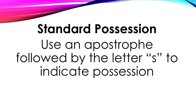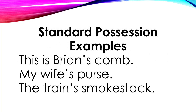Here's standard possession. What you do to indicate possession is to use an apostrophe followed by the letter S. So let's take a look at some examples. This is Brian's comb. Because the comb belongs to Brian, I say Brian apostrophe S. And there's what an apostrophe looks like — it's just to the left of the Enter key on my keyboard. My wife's purse — the purse belonging to my wife — and the train's smokestack. Apostrophe S after train.